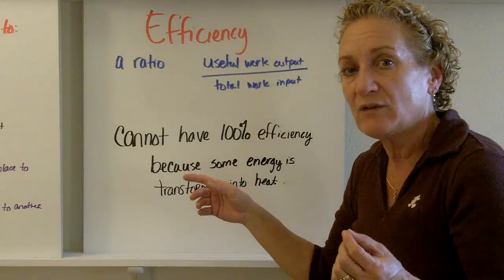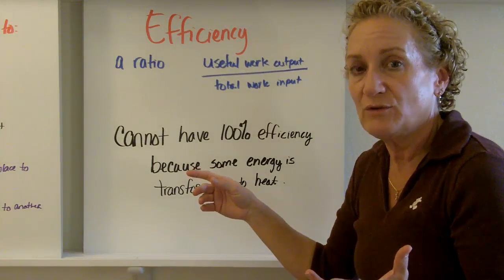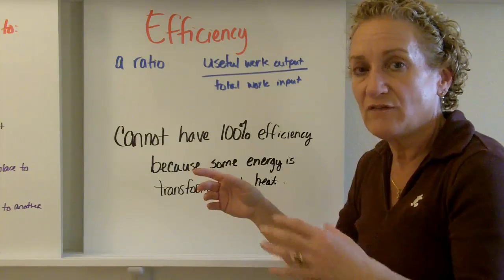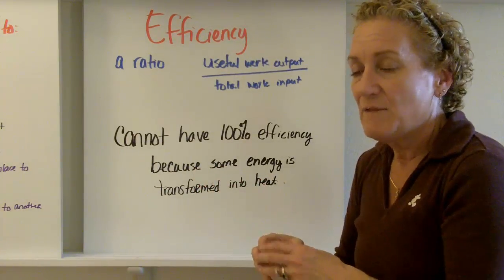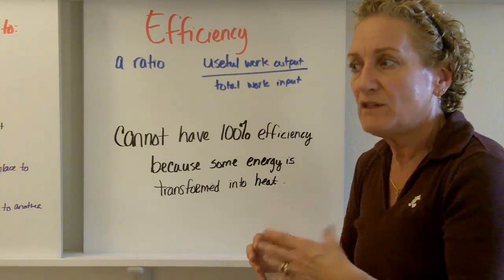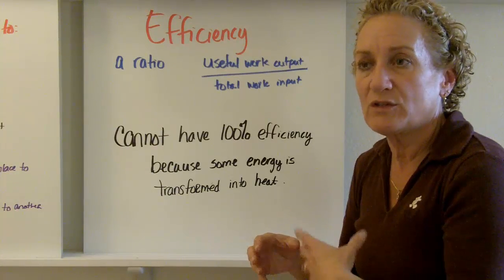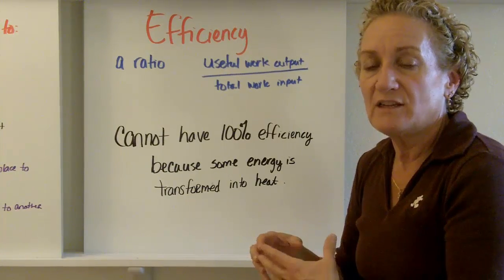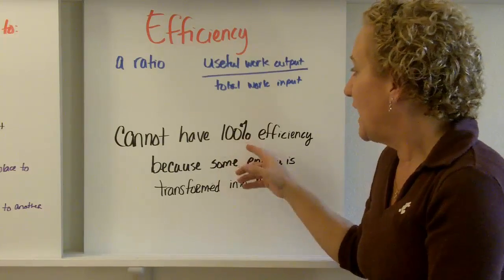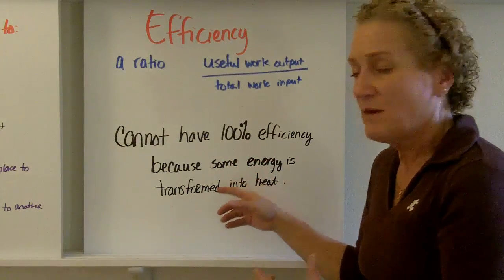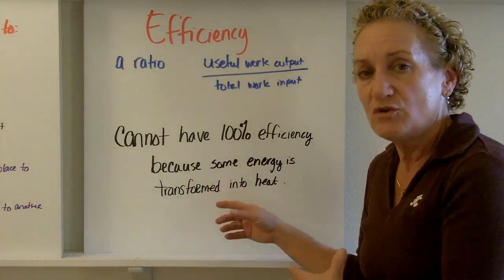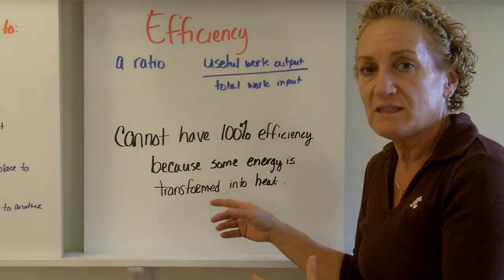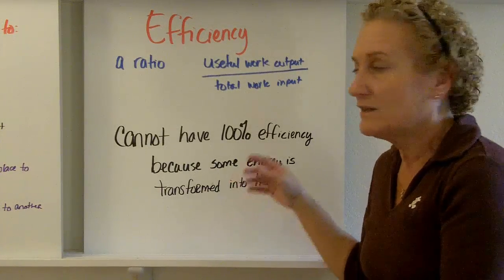Sometimes you hear a sound, and sound is another form of energy where you lose energy from the total that you put in. The third way, not very often, but every once in a while, you're going to see a spark or some kind of light. Light is another form of energy. So, you cannot have 100% efficiency because some energy is transformed, usually into heat, sometimes into sound, once in a while into light.